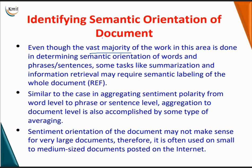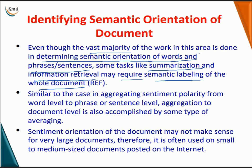Next, identifying the semantic orientation of documents. Even though the vast majority of work is done in determining the semantic orientation of words, phrases, or sentences, some tasks like summarization and information retrieval may require semantic labeling of the whole document. Similar to aggregating sentiment polarity from the word level to phrase or sentence level, aggregation to document level is also accomplished by some type of averaging. This may not make sense for very large documents, so it is often applied to small to medium-sized documents posted on the internet.